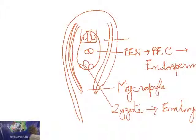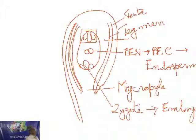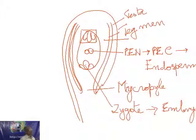The outer integument becomes the testa (outer seed coat) and the inner integument becomes the tegmen (inner seed coat). The nucellus normally disintegrates; antipodals go away. The secondary nucleus becomes the endosperm, and the egg becomes the zygote, which finally becomes the embryo. The two synergids also disintegrate. The hilum and funicle remain in the seed. These are the changes that take place in the ovule as it becomes the seed.